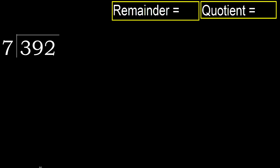392 divided by 7. 3 is less than 7, therefore move to the next digit. 39 is not less than 7, therefore we work with 39.